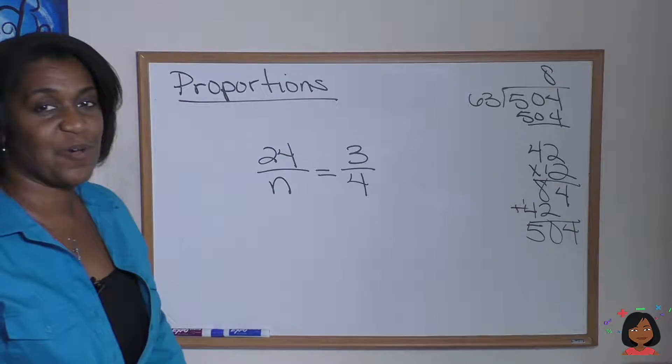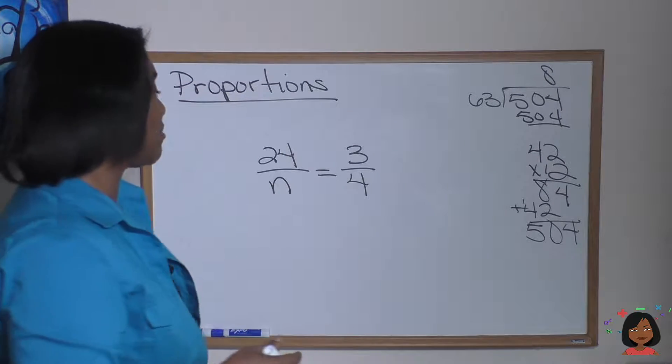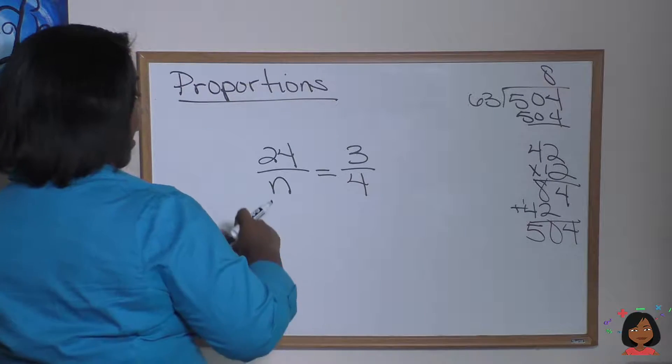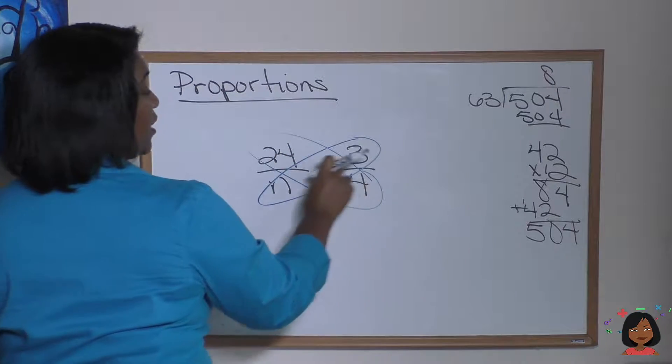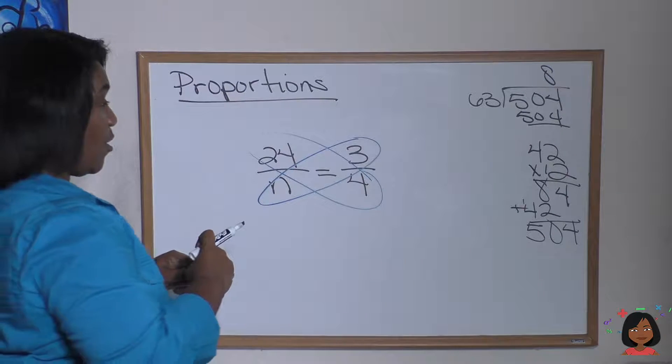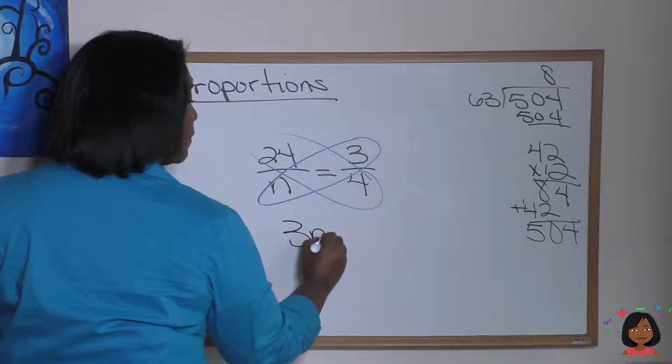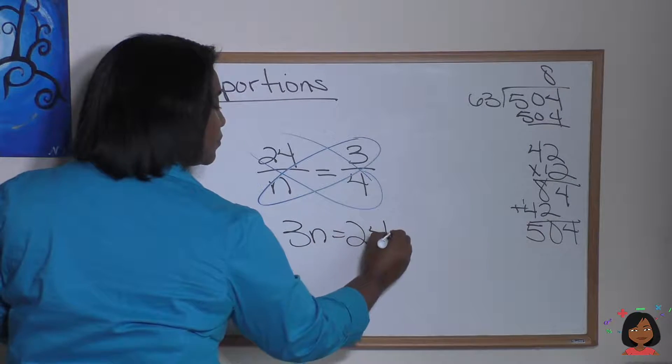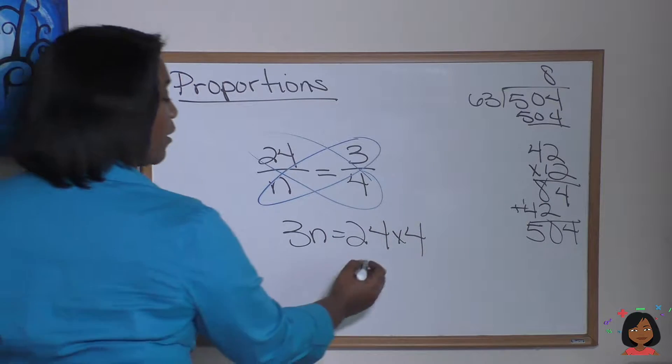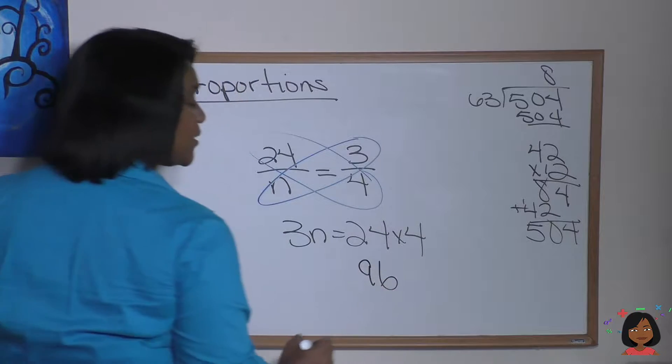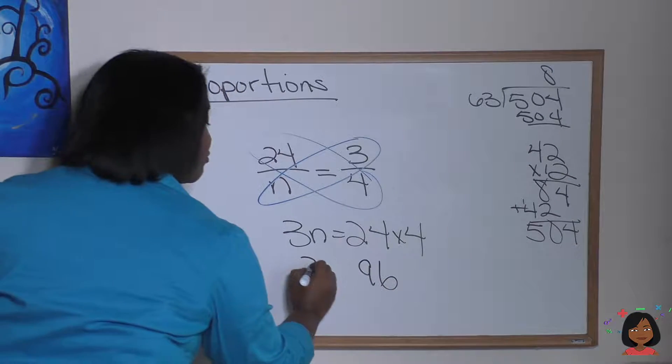Take a look at this one. Again, we're going to cross multiply. So let's get my handy dandy blue out. We're going to do three times n equals 24 times four. Okay, so let's do 24 times four. We know that's going to be 96.